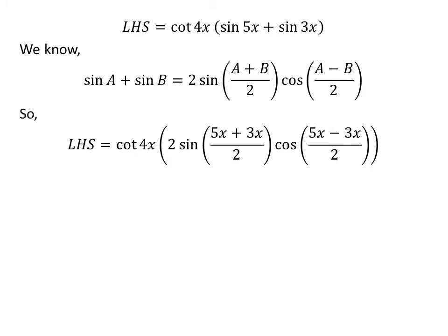Applying this identity, the left-hand side becomes cotangent of 4x times 2 times sine of (5x + 3x)/2 times cosine of (5x − 3x)/2. Further simplification gives us the left-hand side equal to 2 times cotangent of 4x times sine of 8x/2 times cosine of 2x/2.